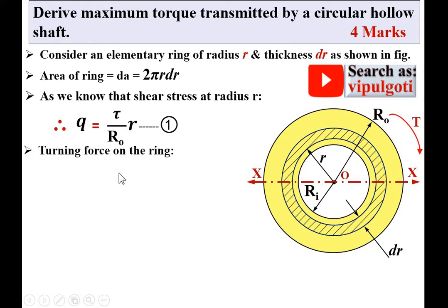The turning force on the ring equals shear stress times area, which is τ/Ro·r·2πr·dr, simplifying to τ/Ro·2πr²·dr.